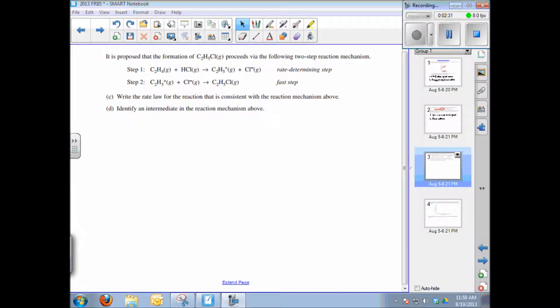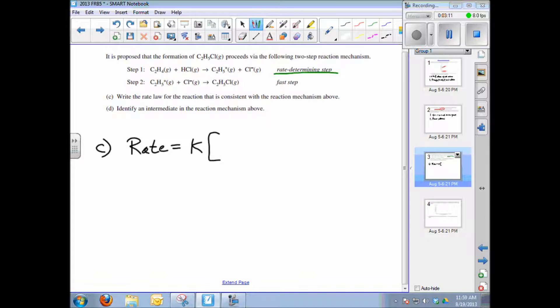The third part of the question says it is proposed the formation of chloroethene proceeds in a two-step reaction mechanism. The first step is indicated as a rate-determining step. That's the slow step. The fast step never determines the rate of a reaction. So for us to write the rate law, we need to have it depend only on the slow or rate-determining step. So rate is equal to the rate constant times the reactant concentration in the slow step. It's going to depend on the concentration of ethylene gas and hydrogen chloride gas.